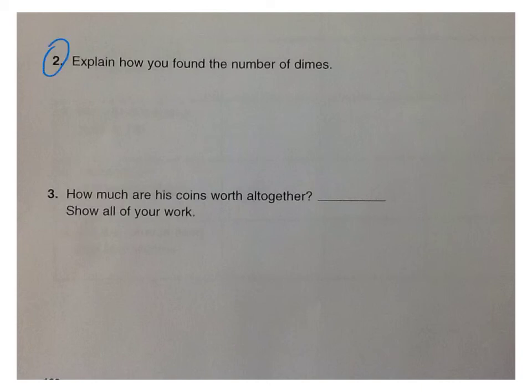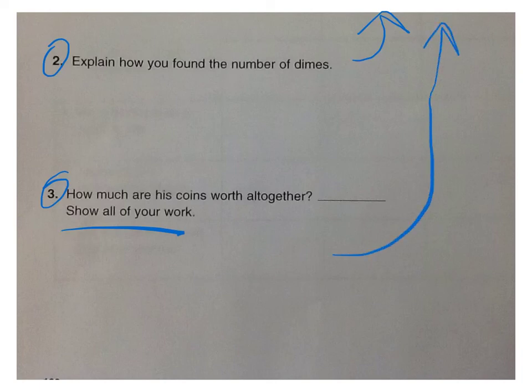Last ones. Number 2. Explain how you found the number of dimes. So this relates to the problem above. Tell how you got that number of dimes. Number 3. How much are his coins worth altogether? So total them up. Show your work down below. So total up all of the coins from above. And how much is that worth? You'll have a dollar amount. When you're all done show Mr. S and you will be completed.